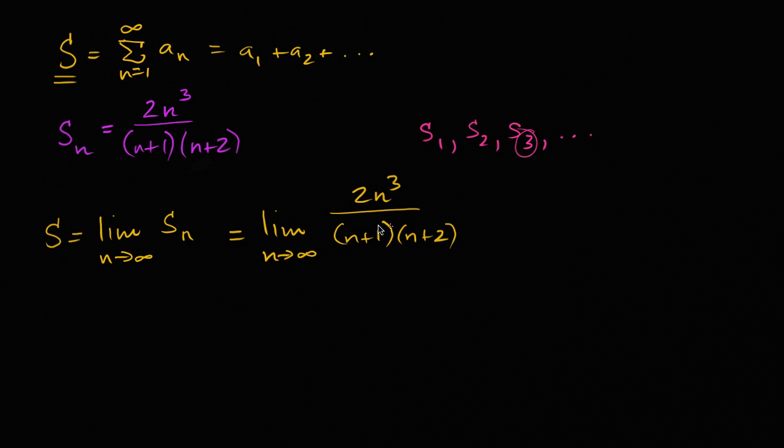But if you want to do it a little bit less hand wavy than that, we can actually do a little bit more algebra. Limit as n approaches infinity, two n to the third power over, let's multiply this out, n squared plus three n plus two.